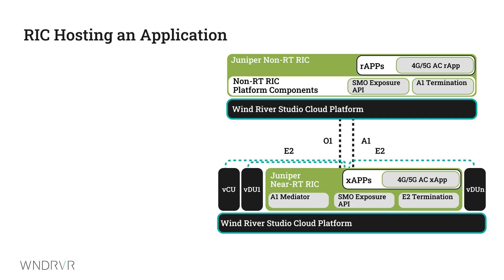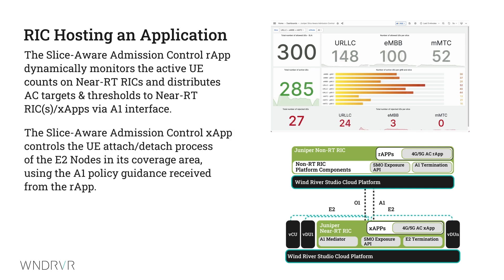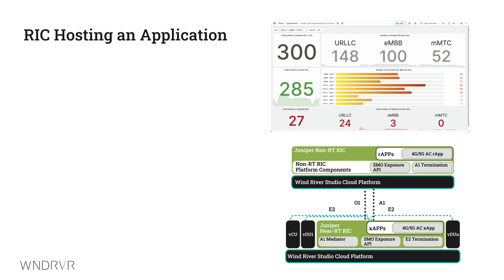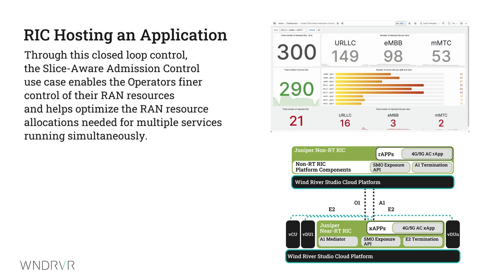Here is an example of a RIC hosting an application monitoring UE counts and distributing AC targets and thresholds. Through this closed-loop control, the SliceAware Admission Control use case enables operators finer control and allocation of RAN resources needed for multiple services running simultaneously.